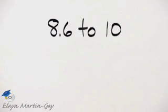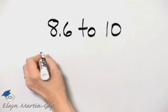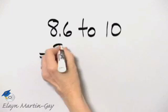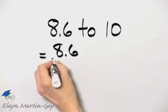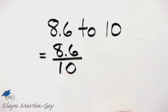Our directions are to write this ratio as a fraction in simplest form. We have 8.6 to 10, so in fraction form this is 8.6 over 10.